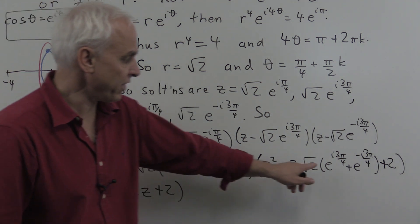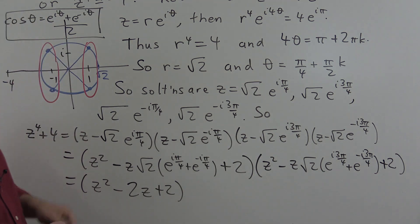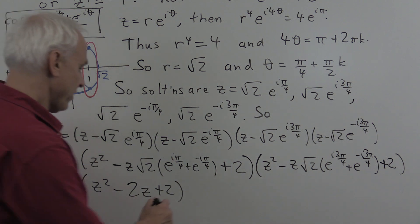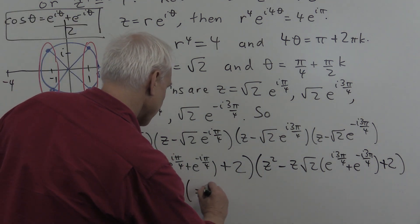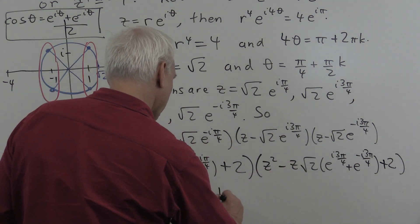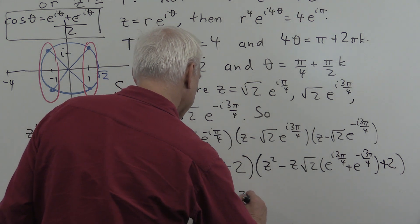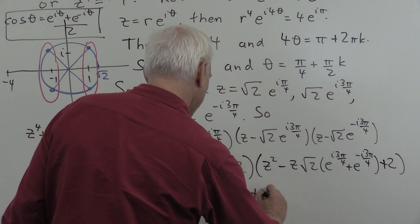And similarly over here, we're getting cosine of 3 pi on 4, which is minus 1 over root 2. So we're getting the factor z squared. There's a minus now, so it'll be the same kind of thing, but with a plus, 2z plus 2.